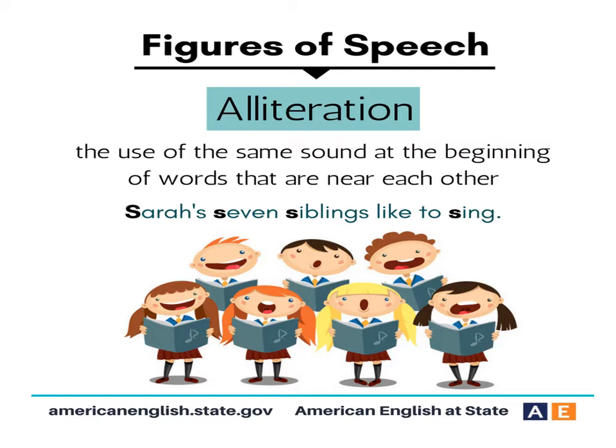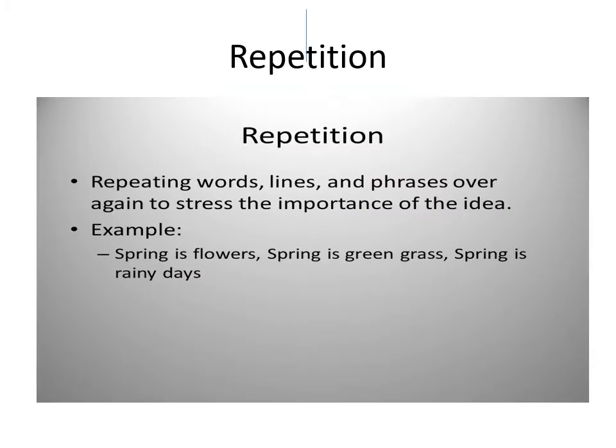Alliteration is the use of the same sound — alphabetical sound, specifically consonantal sound, not a vowel. When the same consonant is used repeatedly in the same line, that is called alliteration.